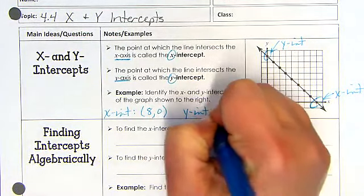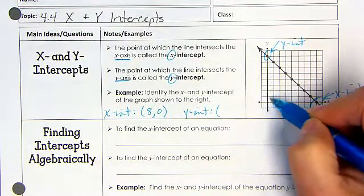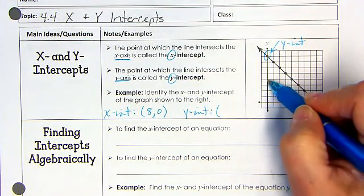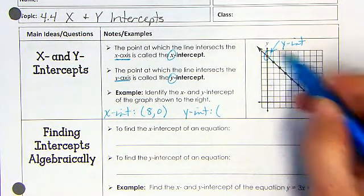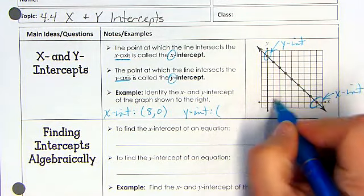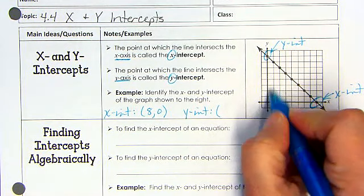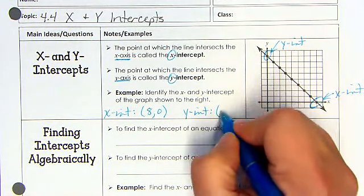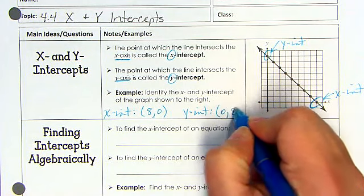The y-intercept is up here, so it's 1, 2, 3, 4, 5, 6, 7, 8 on the y-axis, but it's at 0 on the x-axis because it's on the actual y-axis. So this is (0, 8).